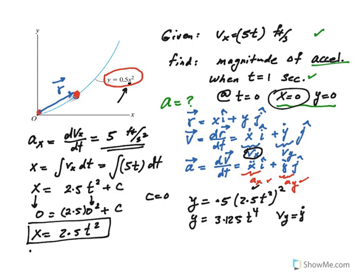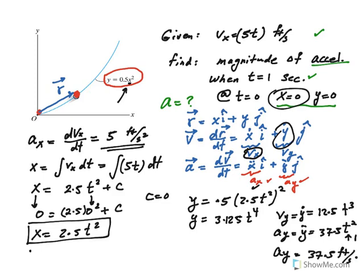Vy is y dot. So that becomes 12.5 t cubed. And then ay is what? Y double dot, or the derivative of vy. So that becomes 37.5t squared. Then plug in t equal 1. When t is 1, you just end up getting 37.5 feet per second squared.